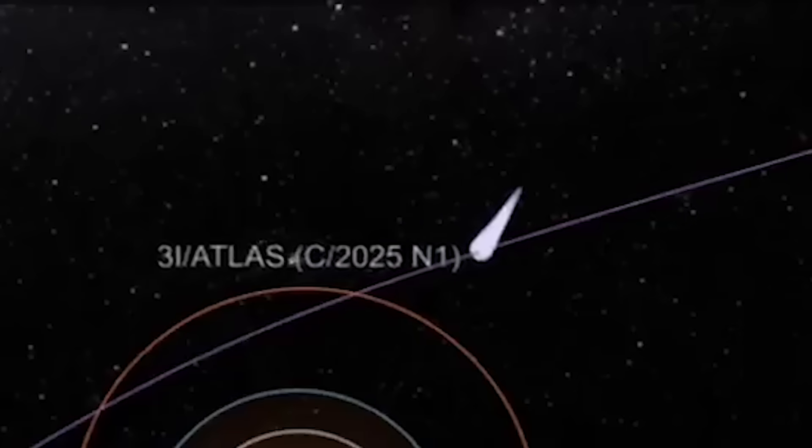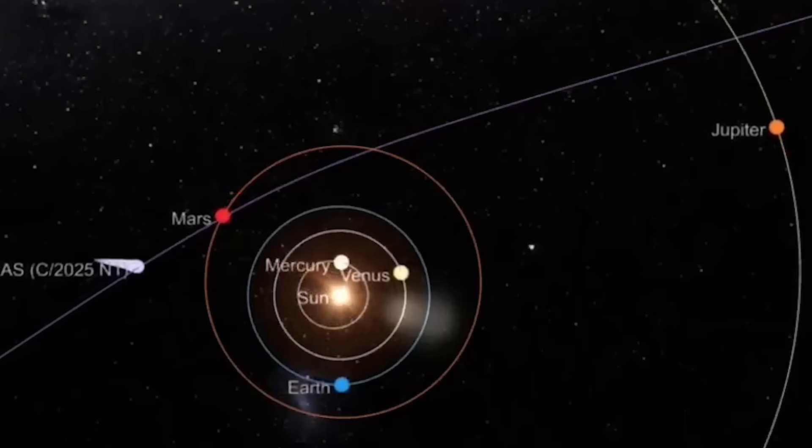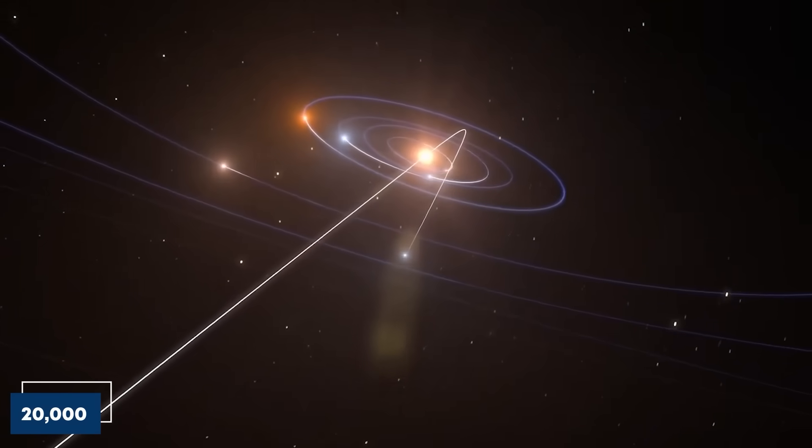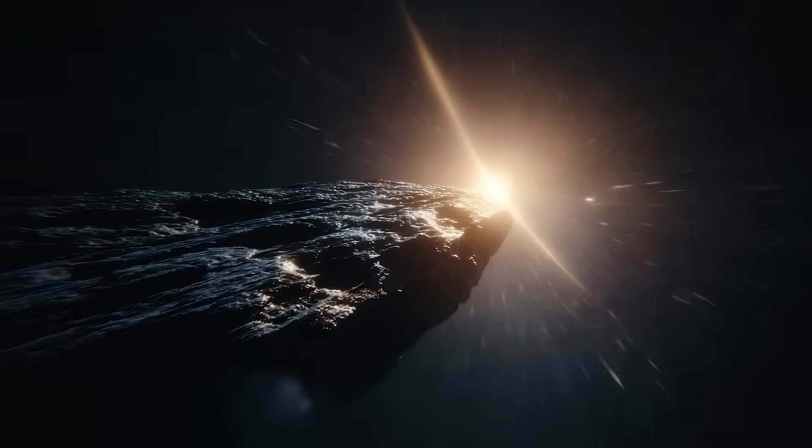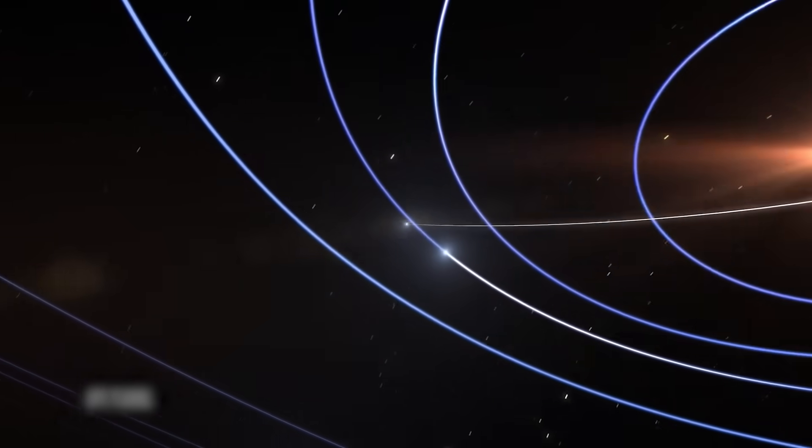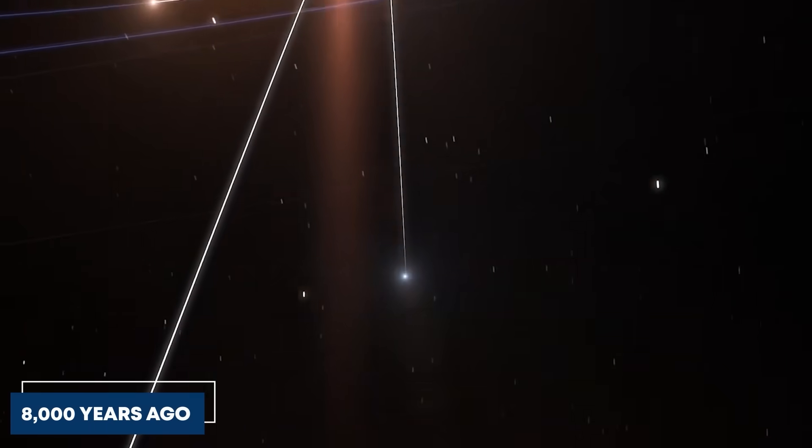Loeb points out that the chance of 3i Atlas's trajectory aligning so closely with the orbits of Venus, Mars, and Jupiter is less than 1 in 20,000. He suggests this could be intentional, perhaps a disguised probe passively mapping our solar system. The timing is also curious. Given its current velocity, 3i Atlas would have entered our solar system's outer regions about 8,000 years ago, coincidentally around the time humans first developed written history.